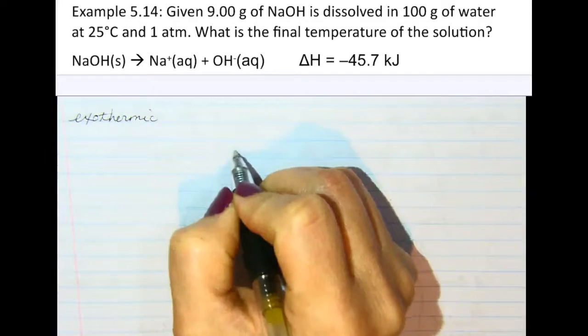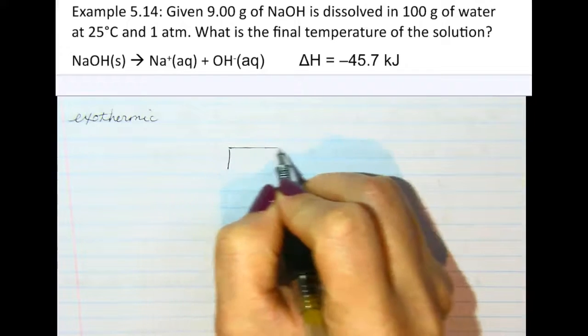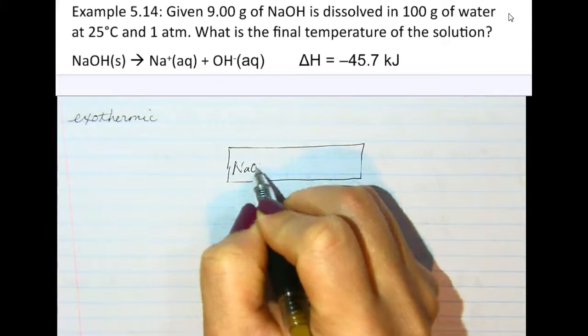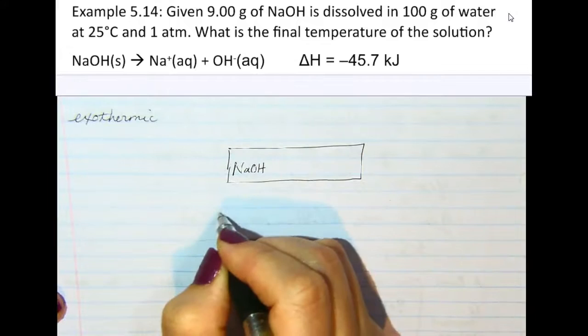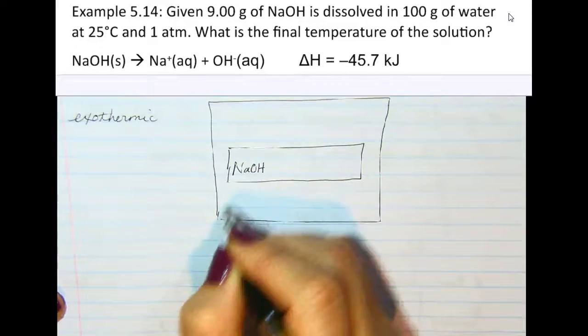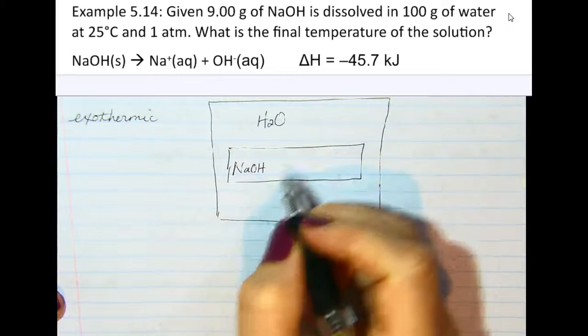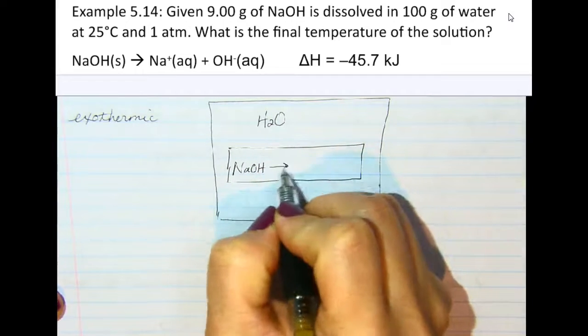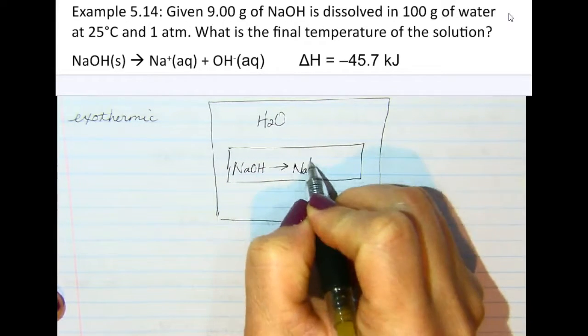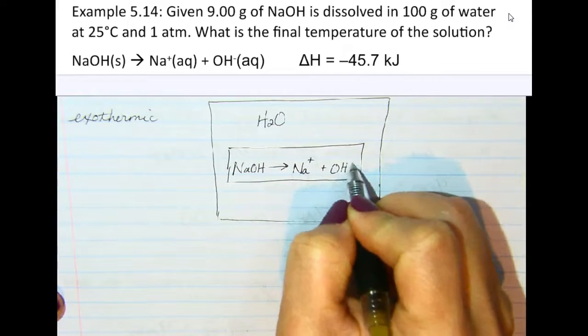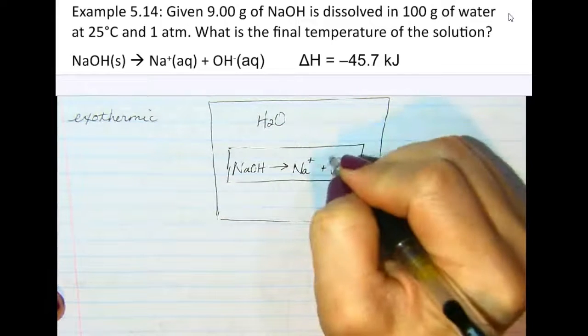So essentially, you have your sodium hydroxide, and it's going to be placed in a container of water. And when you place your sodium hydroxide in the water, it breaks into the sodium ions and the hydroxide ions. This process is exothermic.